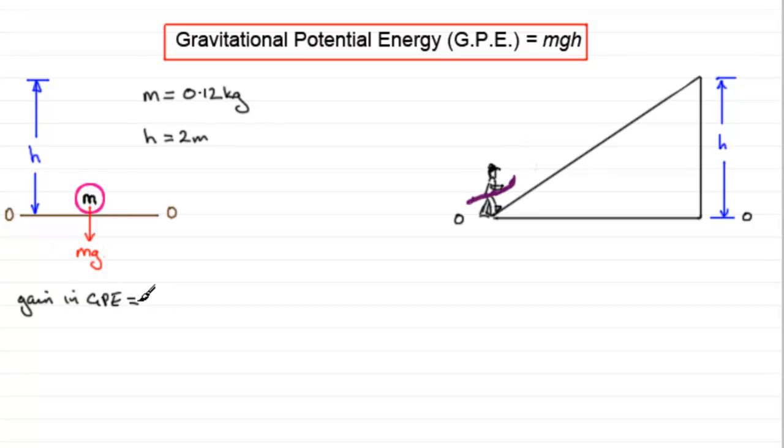And that's going to be equal to MGH. 0.12 times G, if we take it as 9.8, times the height moved, 2. And if you were to work that out in your calculator, you just get 2.352 joules.